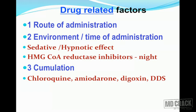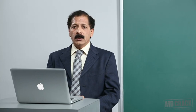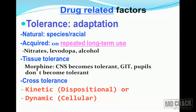HMG-CoA reductase inhibitors — the statins — are likely to produce better action if given at night, because the HMG-CoA reductase enzyme has its maximal activity at night. The next important drug-related factor is accumulation. Drugs like chloroquine, amiodarone, digoxin, and dapsone (DDS) are known to accumulate. Another factor is tolerance — adaptation when a drug is used for a long period and produces progressively less response. Tolerance can be natural in some species and races, or acquired, classically seen with nitrates, levodopa, or alcohol.